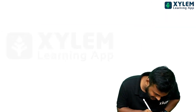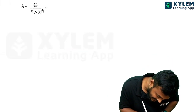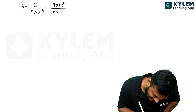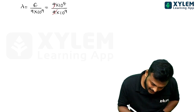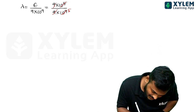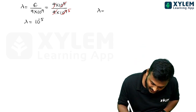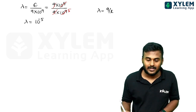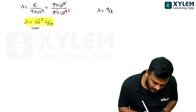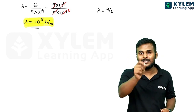Lambda = E divided by 9×10⁹, and the electric field value is 9×10⁴. So λ = 9×10⁴ / 9×10⁹ = 10⁻⁵ C/m. The answer is λ = 10⁻⁵ Coulombs per meter, which is the linear charge density.